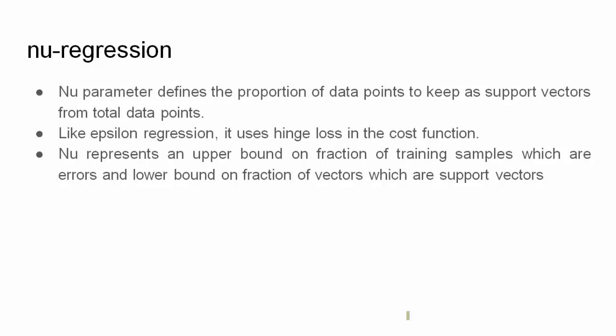Basically, the training samples which have some errors—nu represents the upper bound to them, and the vectors which are support vectors, it represents the lower bound on those.